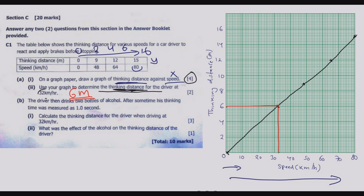Now let us look at question (b). The driver drinks two bottles of alcohol, and after some time his thinking time is measured as 1.0 second. Calculate the thinking distance for the driver when driving at 32 kilometers per hour. This is now a drunk driver, so the graph does not directly apply — we need to calculate using the given data.